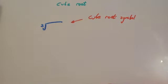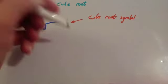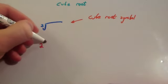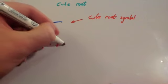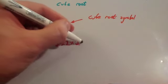So what is a cube root? Remember to cube a number - if you were to do 2 cubed, that would be 2 times 2 times 2, which equals 8.